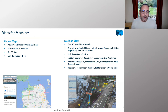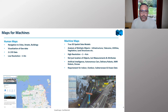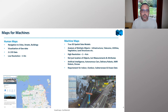When we talk about machines, we're talking about everything from computer models and AI models to better understand cities and environments, all the way through to future forms of autonomy — autonomous cars, delivery robots, AMRs (automated miniature robots), and drones. The requirement for this data spans outdoor, indoor, subterranean, and even ocean environments in the future.